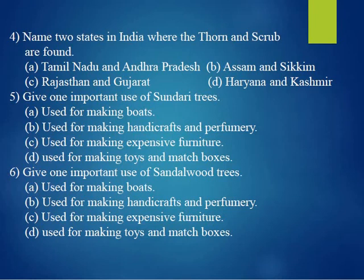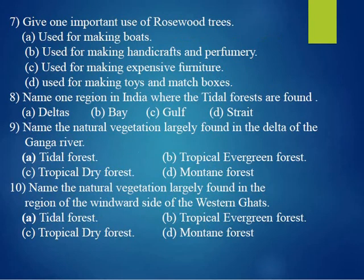Fourth question: name two states in India where the thorn and shrub forests are found. The answer is C, Rajasthan and Gujarat. Fifth question: give one important use of Sundari trees. The answer is A, used for making boats. Sixth question: give one important use of sandalwood tree. The answer is B, used for making handicrafts and perfume. Seventh question: give one important use of rosewood trees. The answer is C, used for making expensive furniture.